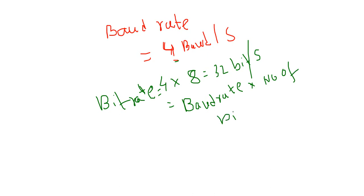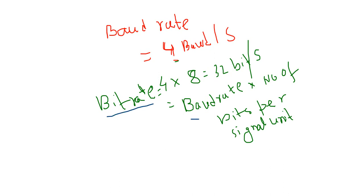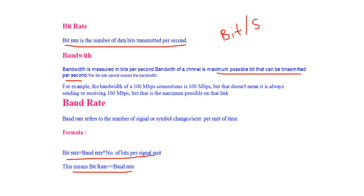So the relation is: bit rate = baud rate × number of bits per signal unit. This means bit rate is greater than or equal to baud rate, since the number of bits per signal unit is always a positive integer and cannot be negative or a fraction.